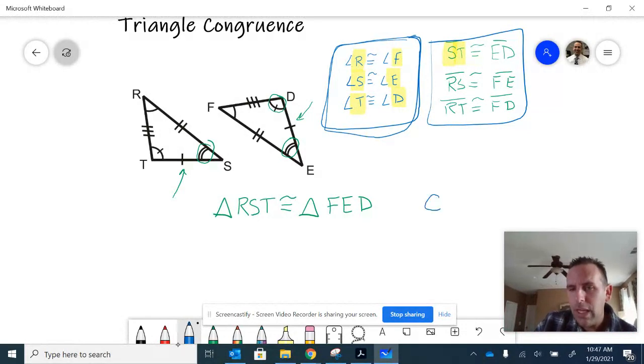We have an abbreviation for that. We say CPCTC, which represents corresponding parts of congruent triangles are congruent. It's a mouthful. That's pretty much how it works, though.